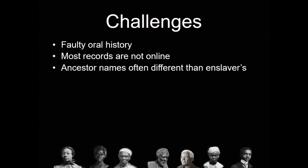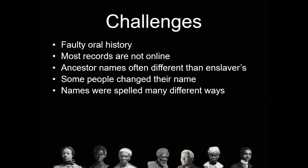Names of formerly enslaved people are often different from those of their last owner — they may carry a name going back multiple generations of owners. Some people also changed their names, particularly those on the Underground Railroad to protect their identity. Many names were spelled in many different ways; I found my own name 'Burroughs' spelled over 20 different ways — a real challenge in tracing ancestors.